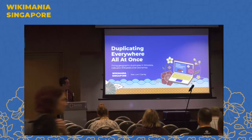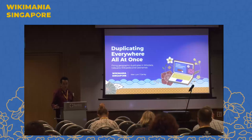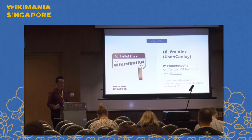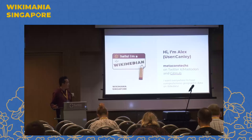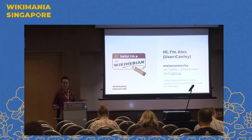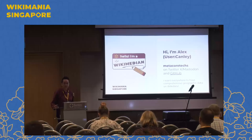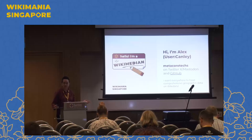What I'm looking at is fixing geographic duplicates on Wikidata, Cebuano Wikipedia, and GeoNames. I'm Alex from Wikimedia Australia, user Canly on Wikimedia Projects, and MetaCortex on Twitter, X, Mastodon, and GitHub. The GitHub is important because a lot of this talk — the code, queries, and so on — I'll be putting on GitHub.